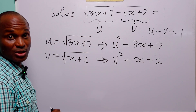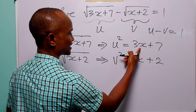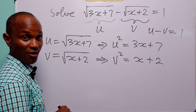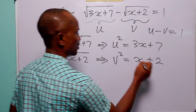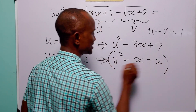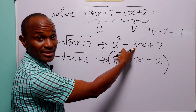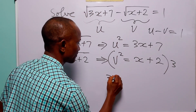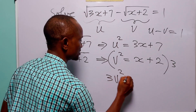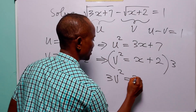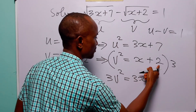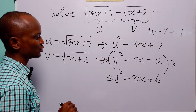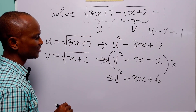The next thing we are going to do is eliminate x from these two equations. To do that, we multiply through the second equation by 3, giving us that 3v squared is equal to 3x plus 6.